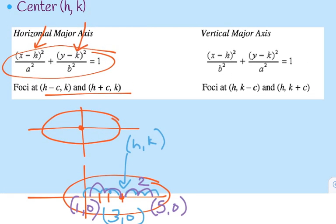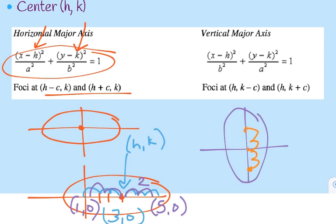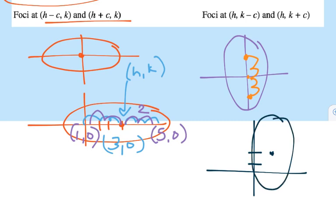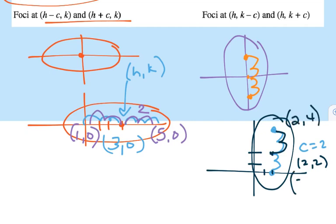If it's a vertical major axis, now it's taller than it is wide. I would add and subtract c from the y-coordinate of the center. So if my center is (2, 2) and c is 2, the x doesn't change but the y does — giving foci at (2, 4) and (2, 0).